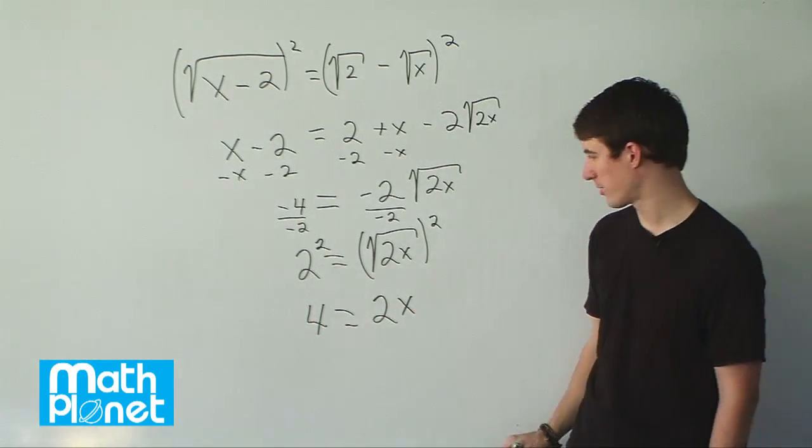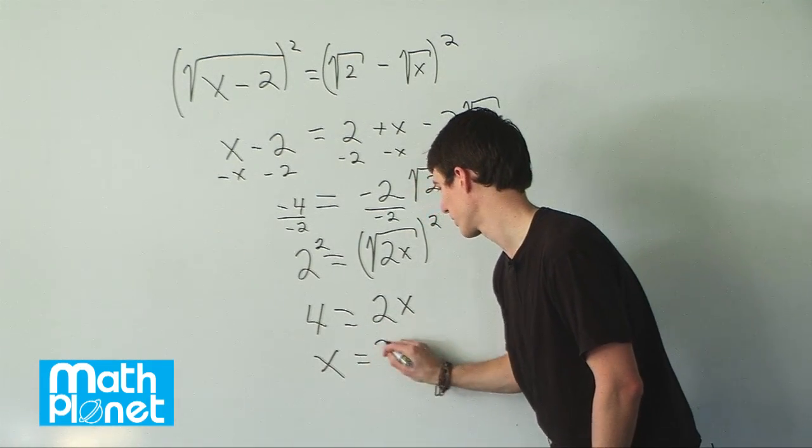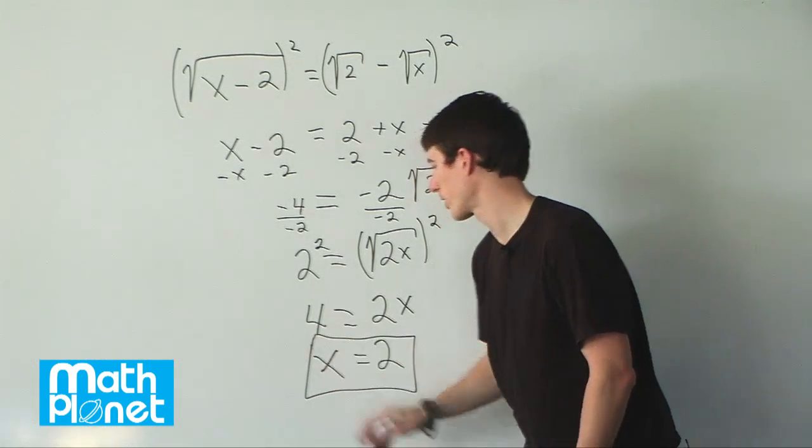And then finally, divide both sides by 2, which gives us 4 divided by 2. x equals 2. So that's our final answer.